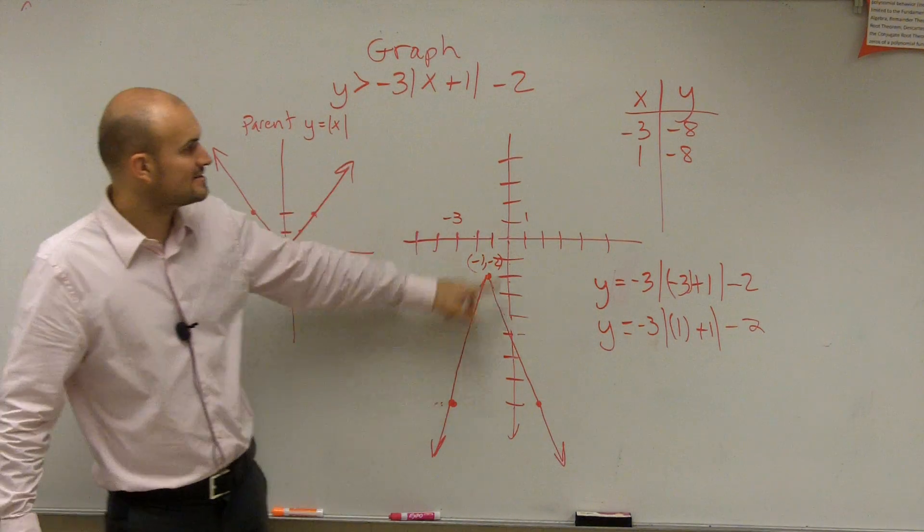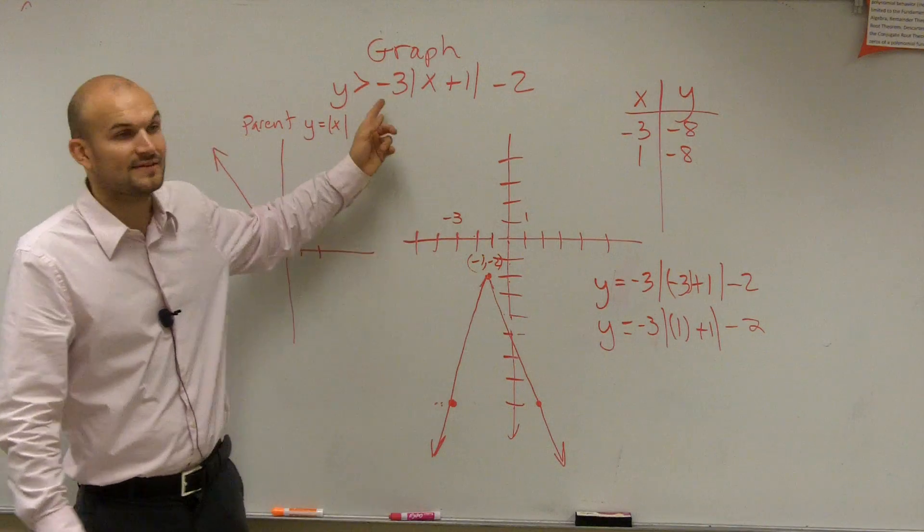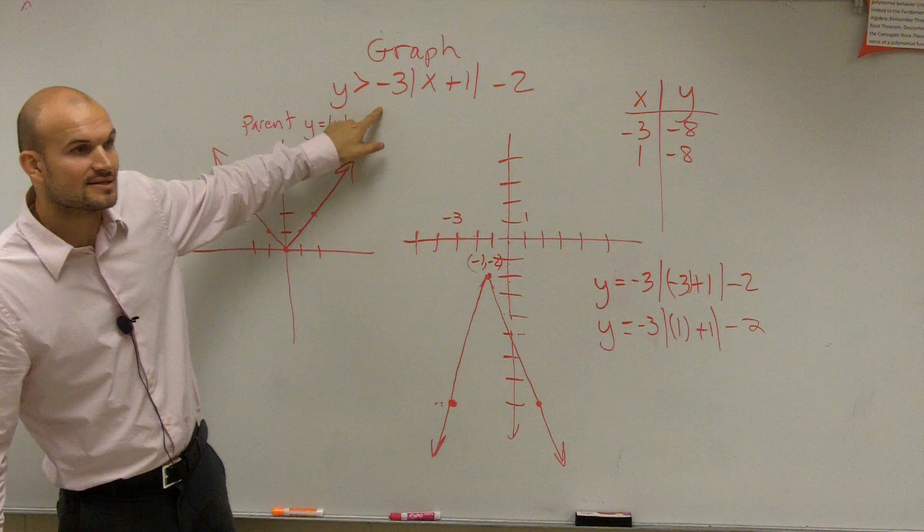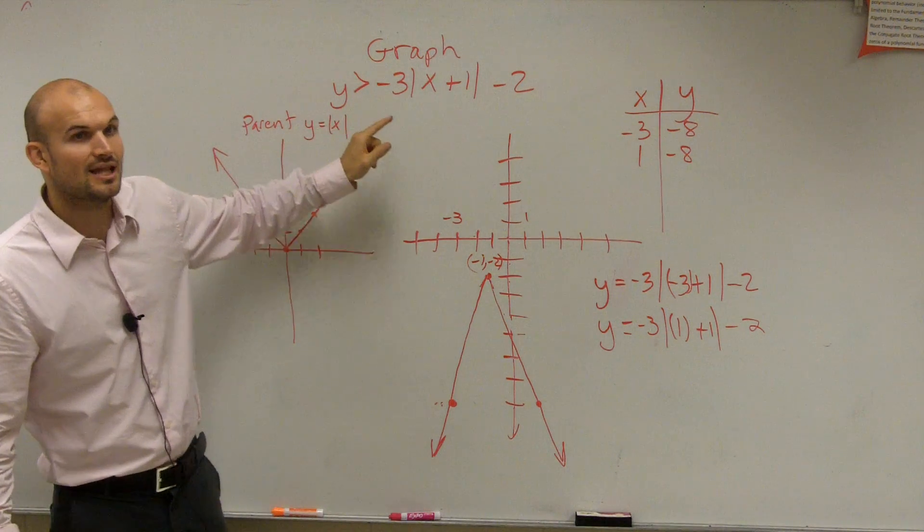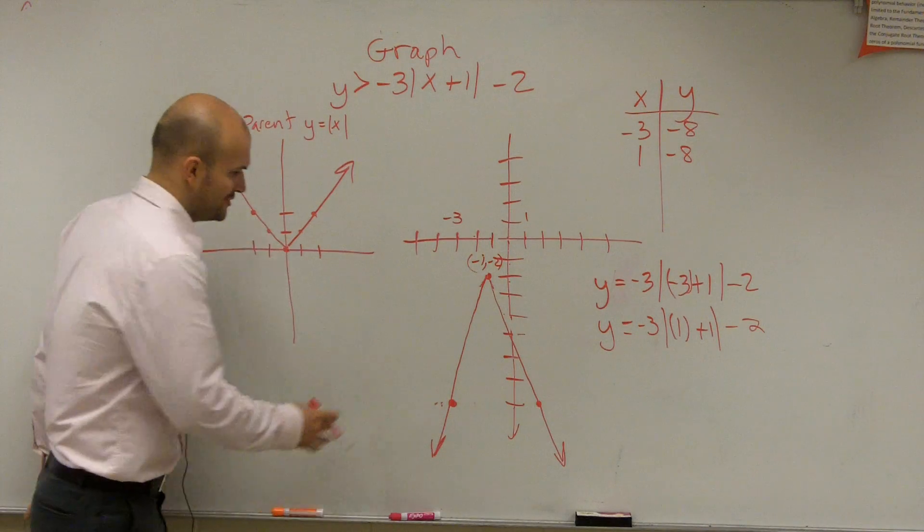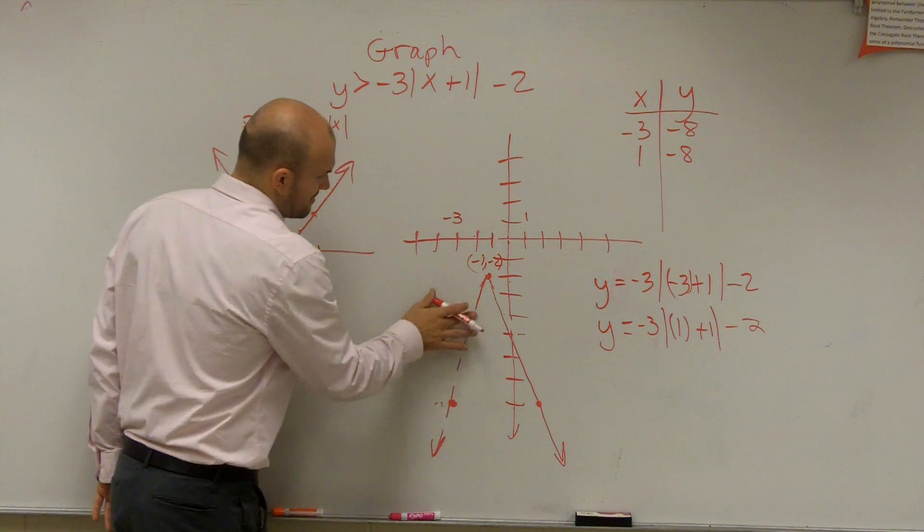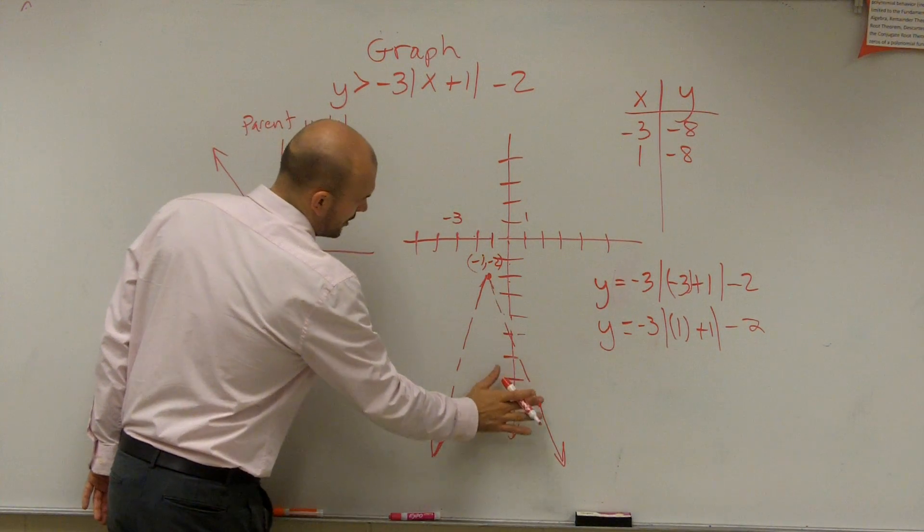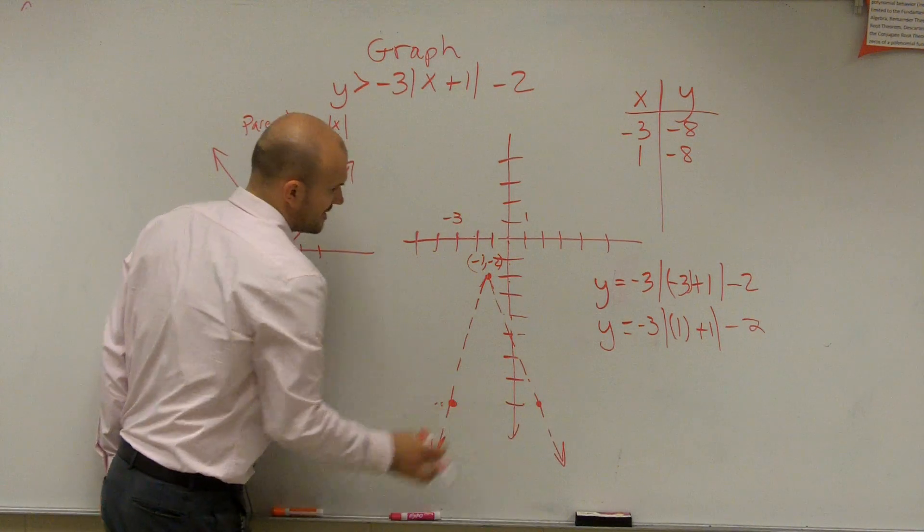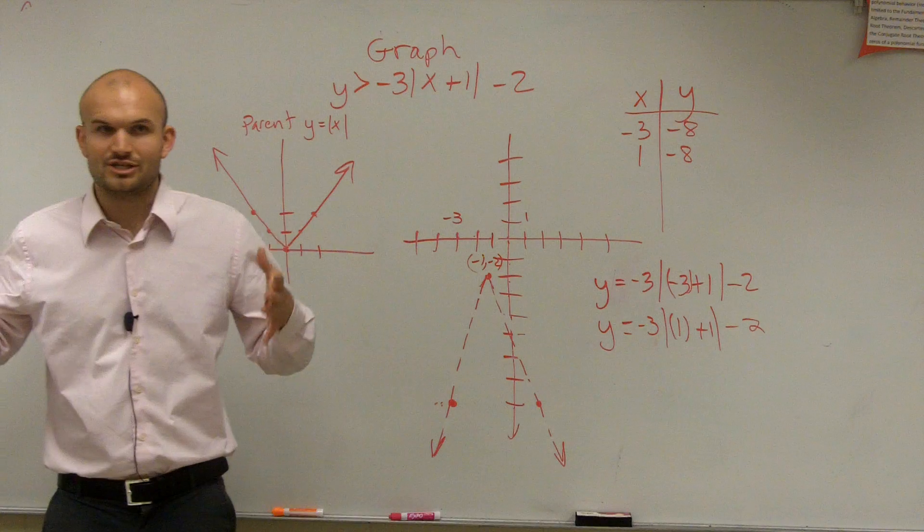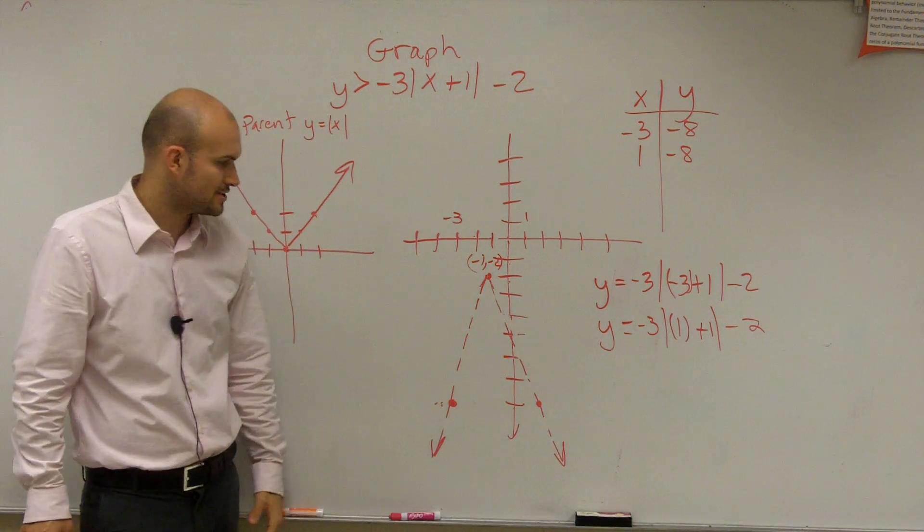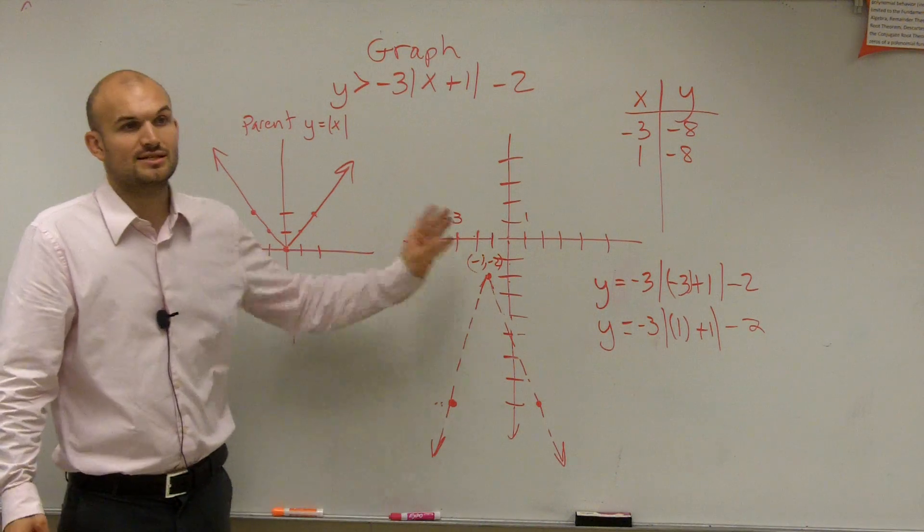Now we need to look at, ladies and gentlemen, this doesn't say graph the absolute value inequality, meaning we need to know what this sign is. If it's greater than, that's going to tell us to either use a dashed or a solid line. Which one? Dashed. So make sure you use a pencil so you can make this a dashed line, or just look ahead and know it's going to be a dashed line. I got kind of caught up into teaching how to graph it and I forgot to realize we're doing an inequality, not an equation. So this is going to be a dashed line.